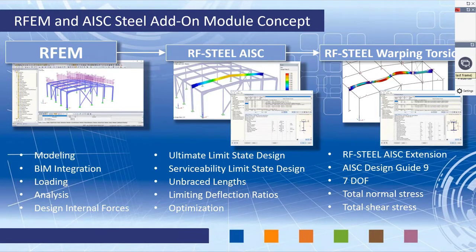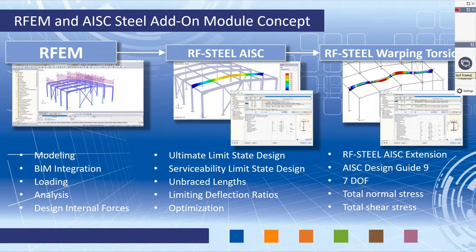RFEM is the main analysis tool. RF Steel AISC is a design module that performs ultimate and serviceability limit state designs according to the AISC. Everything is brought in from the main program — I don't need to remodel the structure, redefine loads, cross sections, or materials. I just define information specific to the AISC standard such as unbraced lengths. We also define limiting deflection ratios for serviceability checks, and we can optimize cross sections to use the most efficient section available.